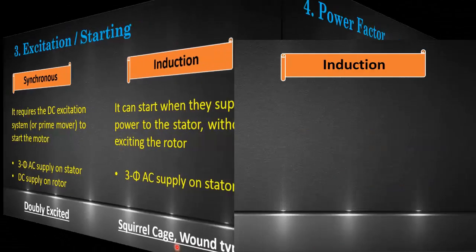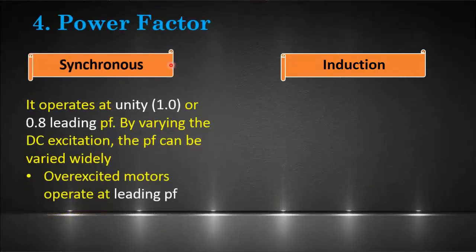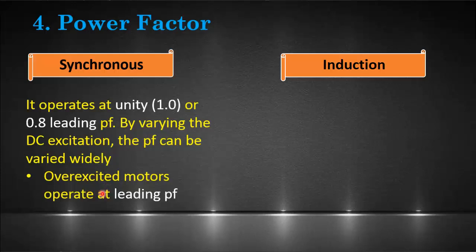Another difference is based on power factor — the angle between current and voltage. The synchronous motor normally operates at unity or 0.8 leading power factor, and we can control its power factor from lagging to leading by varying the DC excitation. Over-excited synchronous motors operate at leading power factor and are used for power factor correction, whereas the induction motor only operates at a lagging power factor.